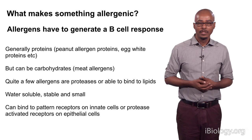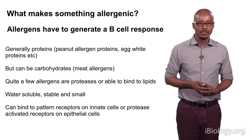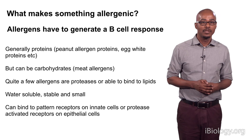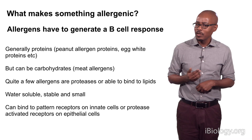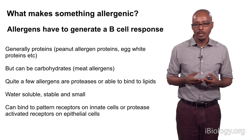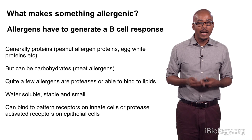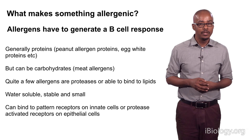What makes something allergenic? Allergens have to be able to generate a B-cell response, because B cells are what make antibodies. Those allergens are generally proteins, such as peanut allergens or egg white proteins. They can be carbohydrates, such as found in meat. Quite a few allergens are actually proteases, or are able to bind lipids. Most are water-soluble, stable, and small, and in some cases resistant to heat. Generally, they can bind to pattern recognition receptors on innate cells, or protease-activated receptors on epithelial cells, that initiate the immune response to them.